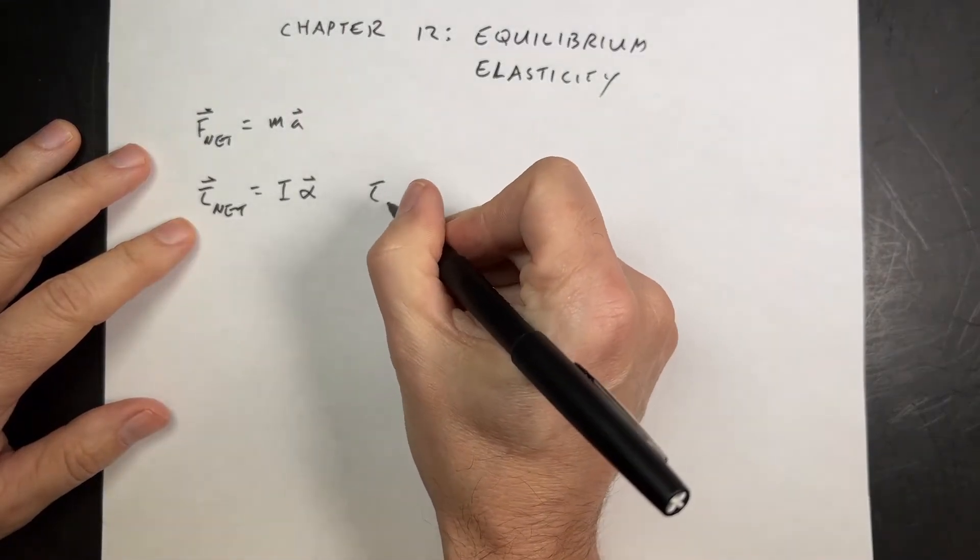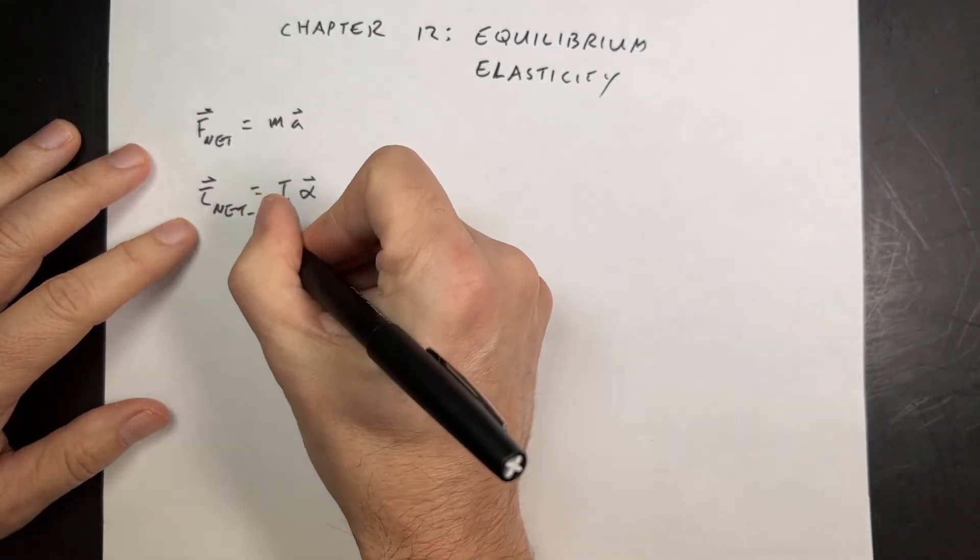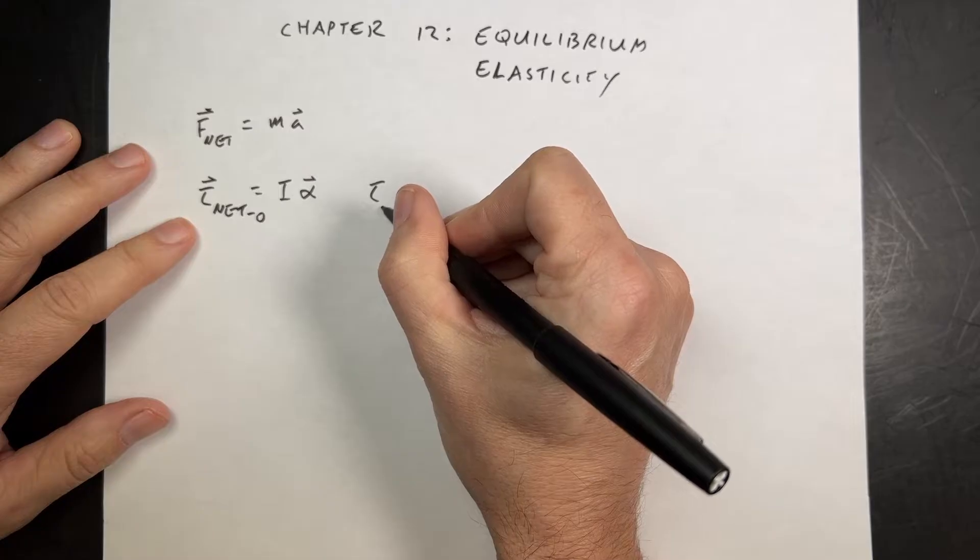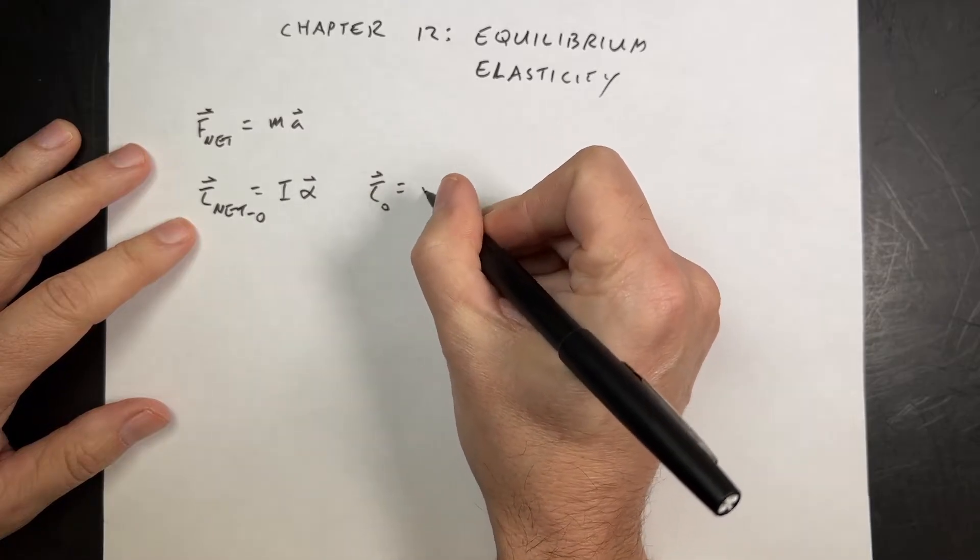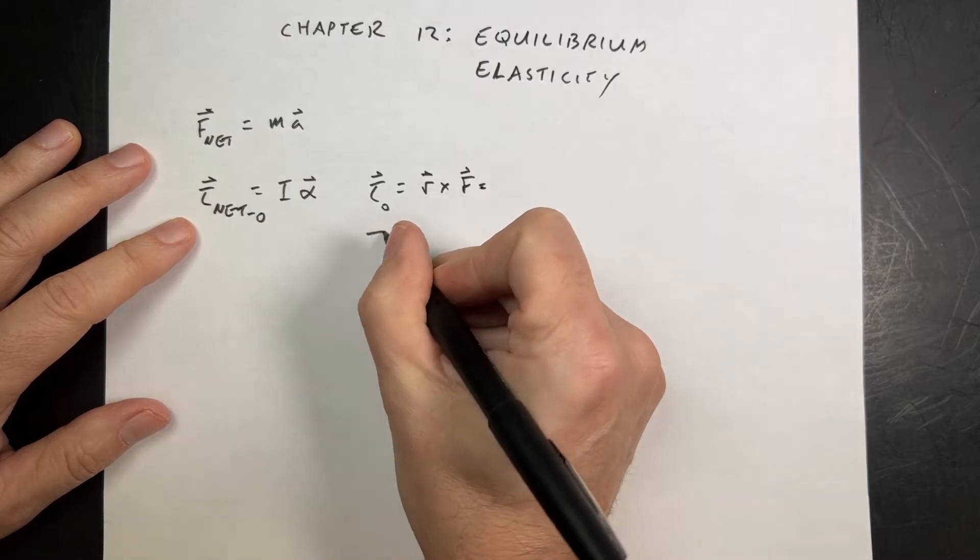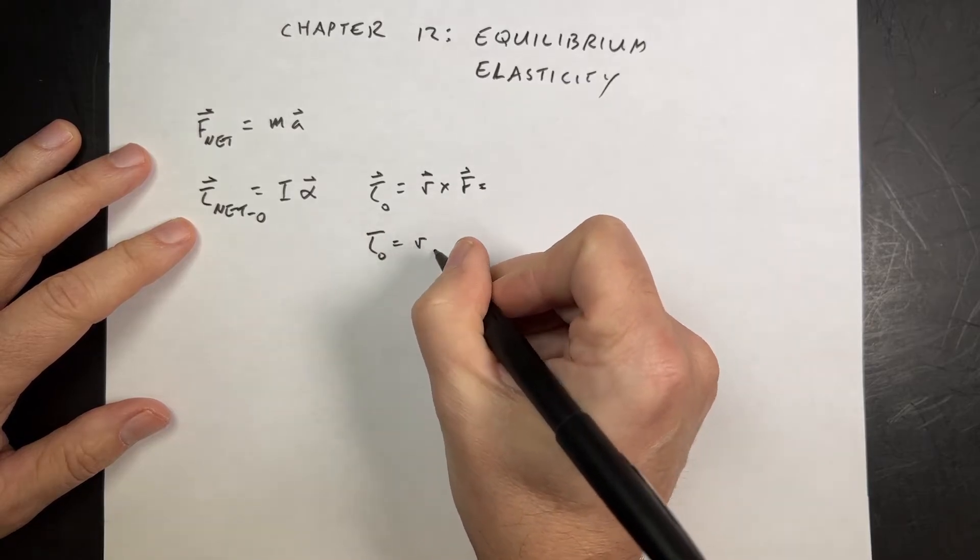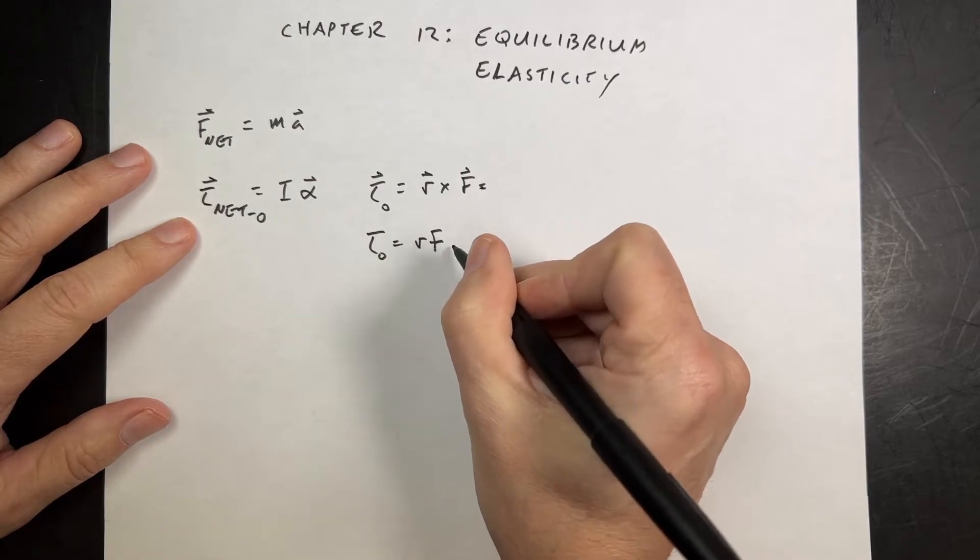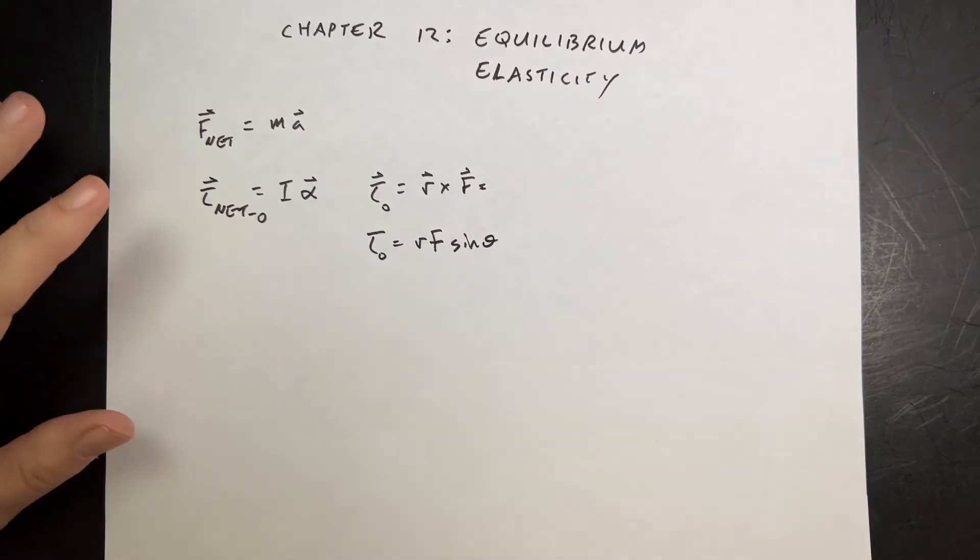And then we have the definition of torque. Torque about some point O is R cross F. The magnitude torque O is R F sine theta. Okay, so that's important.